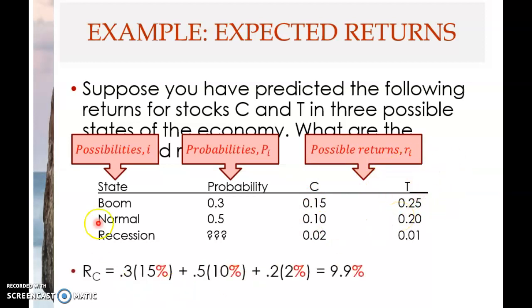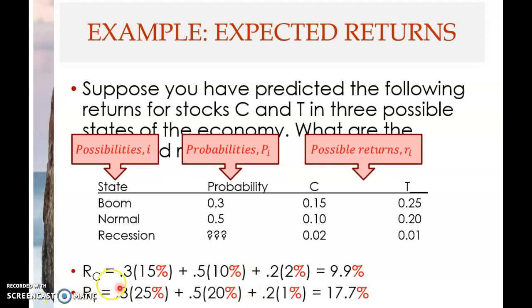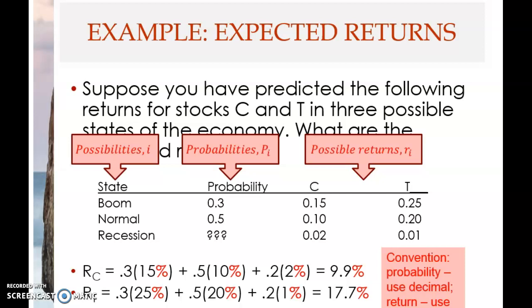We apply the formula. This is the expected return for stock C using the formula, and this is the expected return for stock T using the formula. The convention when you compute: for probability, use decimal — 0.3 — even if it is given in percentage. But for the return, use percentage — 15% — not decimal, even if it is given as decimal. That is the convention. This is how you get the expected return for the two stocks, and we will continue in the next clip.